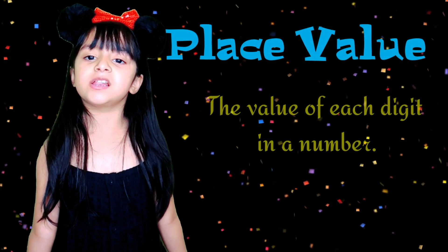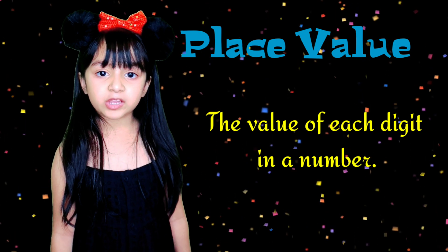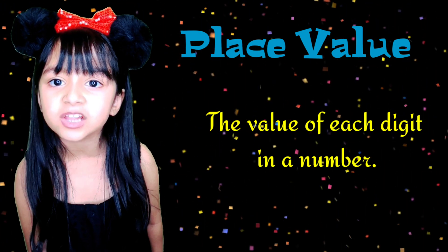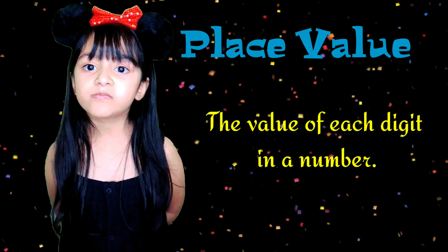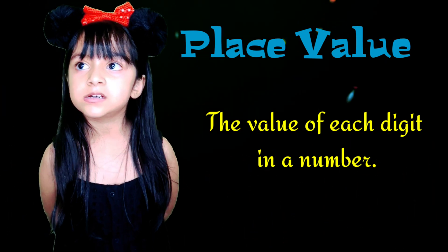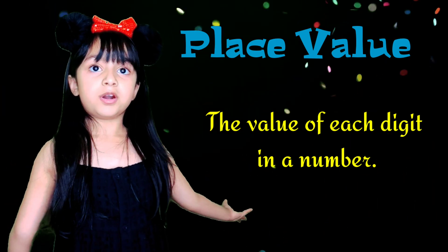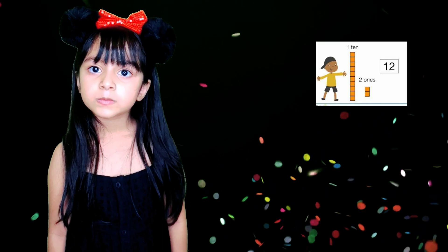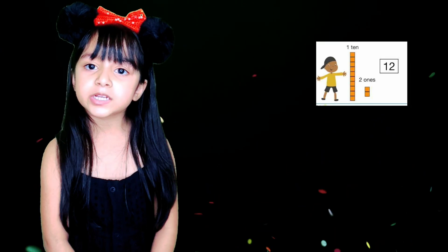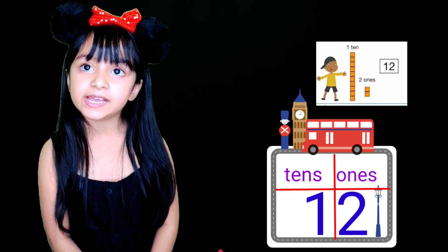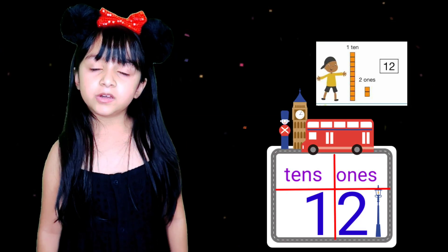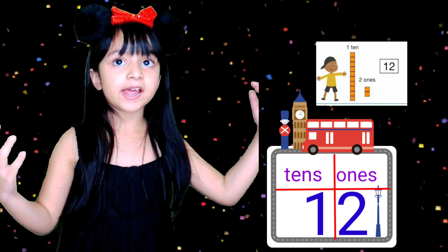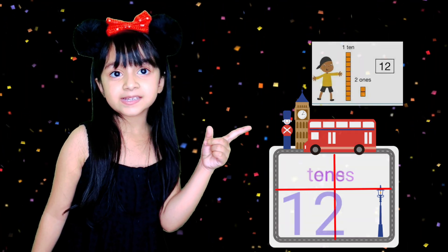Now I will tell you what place value is. Place value is the value of each digit in a number. When we have two digit numbers, one digit is placed in the ones column and the other one in the tens column, like this.